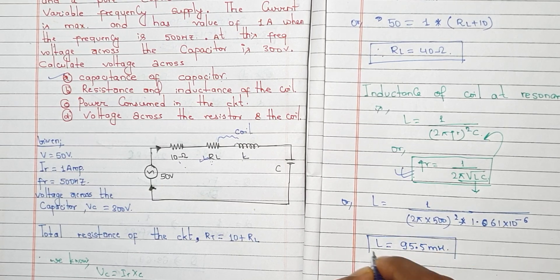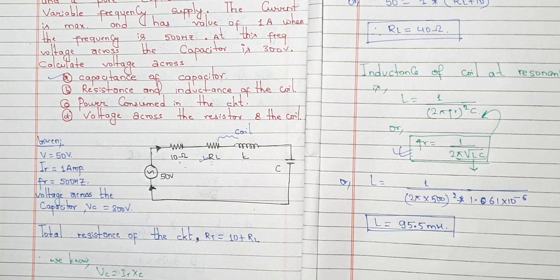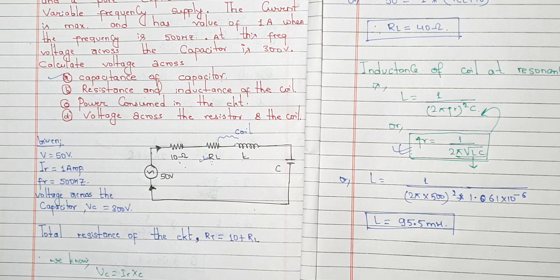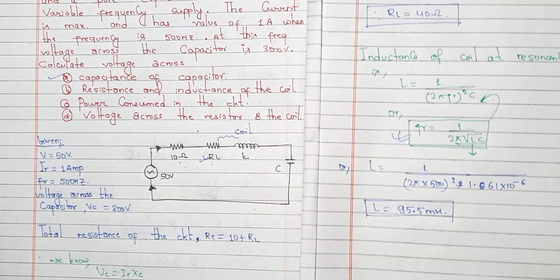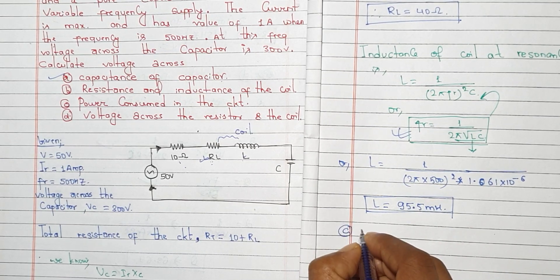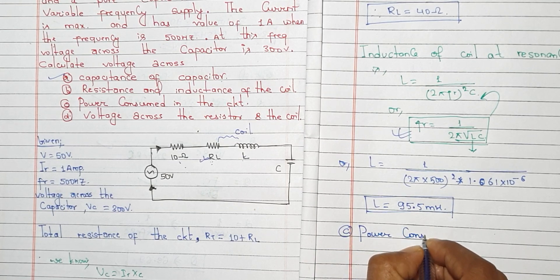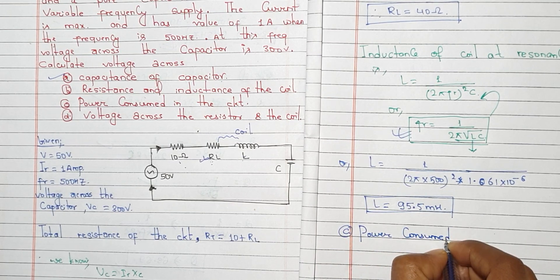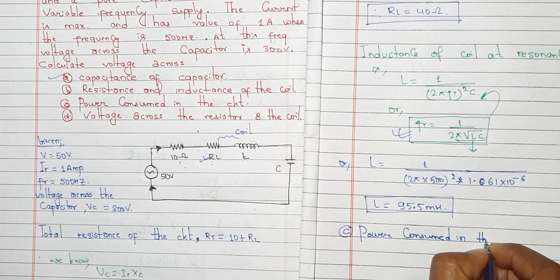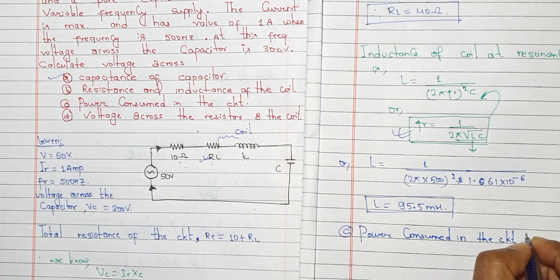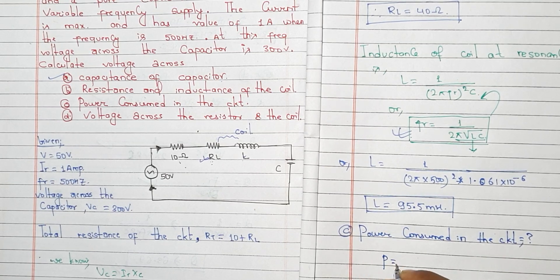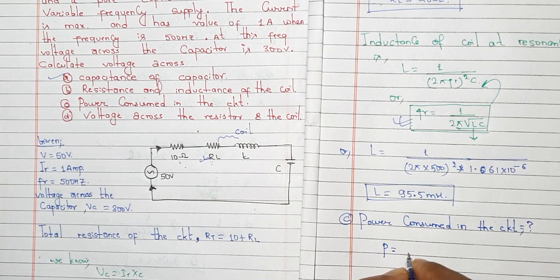We have to calculate the total power consumed in the circuit. Power consumed equals I squared times R.